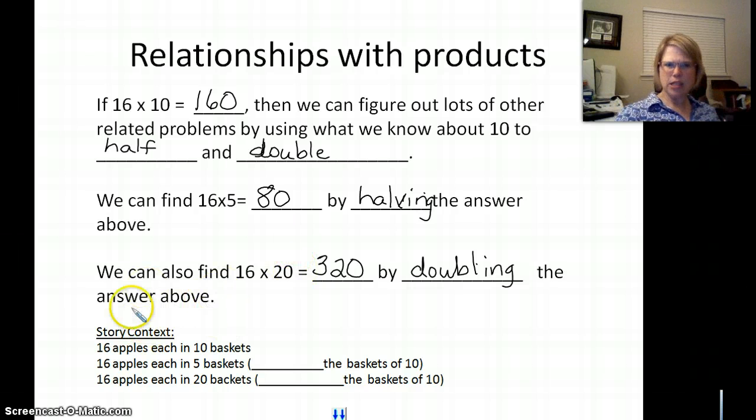Let's take a look at a story context down here so it makes sense to you. If I said I had 16 apples each in 10 baskets, right? Equal groups put together. Well, what if I didn't have 10 baskets? What if I only had 5 baskets? How is that related? Isn't 5 baskets half the baskets of 10? Right? So it would be half of the amount. And let's say that I had 16 apples each in 20 baskets. Well, how is that related to 10 baskets? Wouldn't that be just double the baskets of 10?